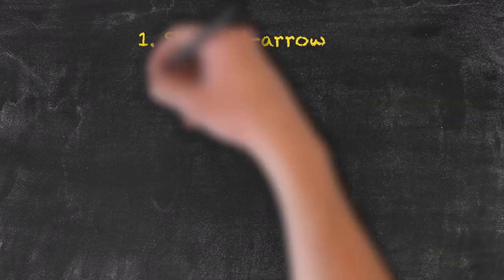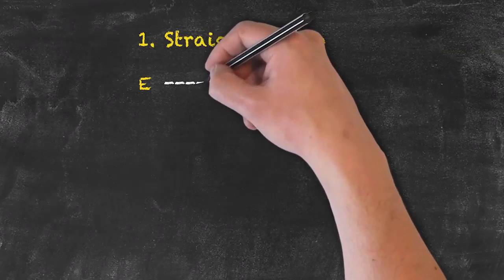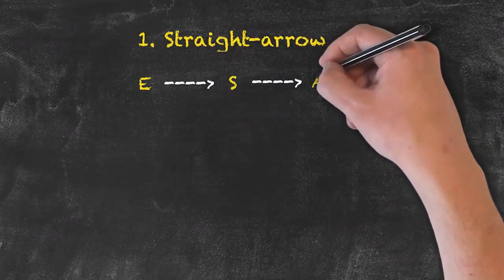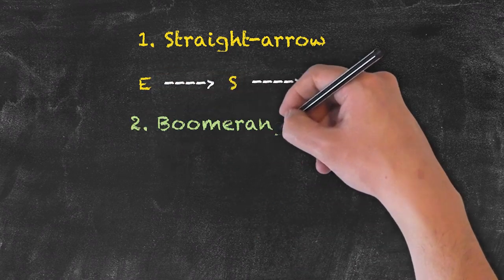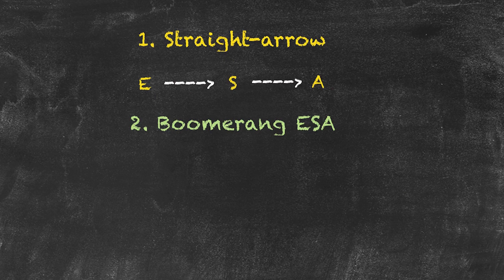The straight arrow, as its name implies, is just running through each of the three phases — E, S and A — in a straight line. The second type is known as the boomerang, and as the name implies, what happens in a boomerang lesson is that we send something out to start with and it comes back to us.